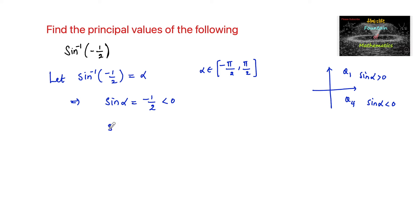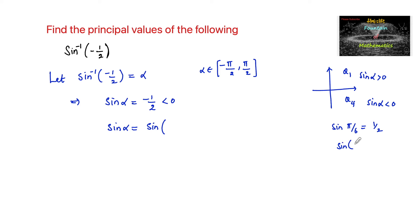So we can write sin alpha is equal to minus 1 by 2. Since sin of pi by 6 is equal to 1 by 2, we have sin of minus pi by 6 equals minus 1 by 2. The angle minus pi by 6 belongs to the fourth quadrant, so we can write alpha equals negative pi by 6.